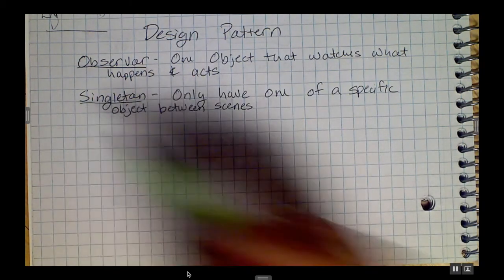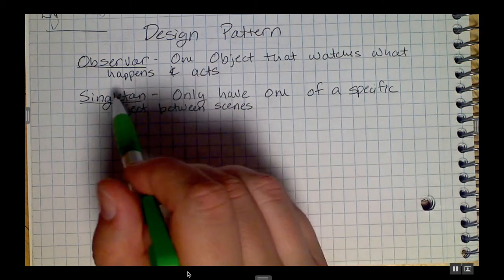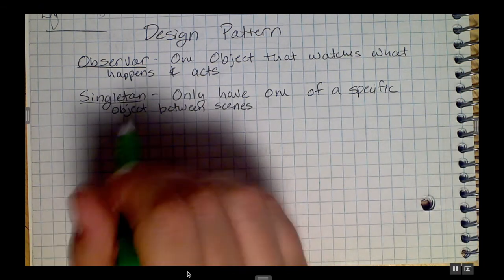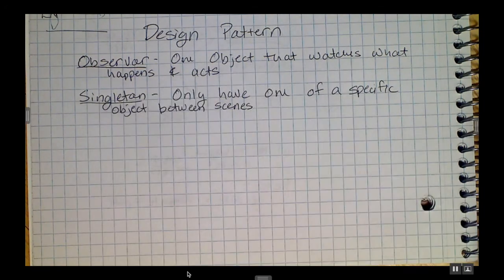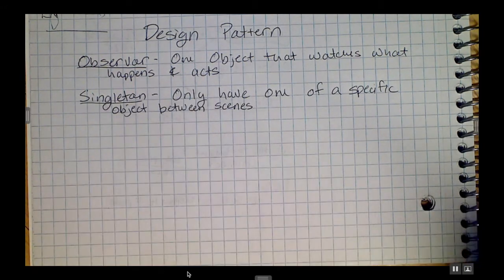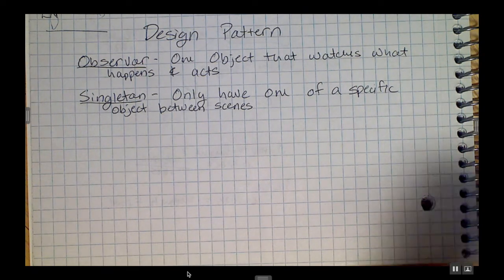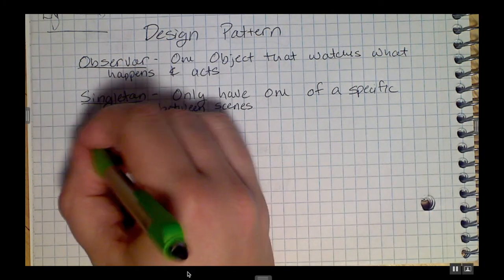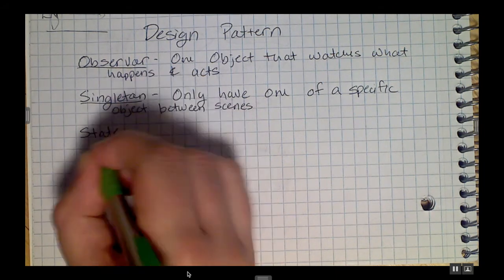If you have other objects that refer back to it, you want to make sure that you are always having exactly one of these in the scene. So if they're referring back to something, they're referring back to the correct one. That's called the singleton pattern.